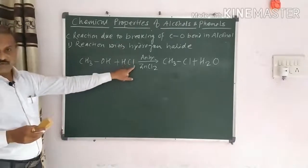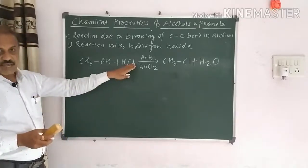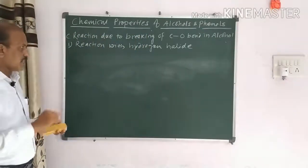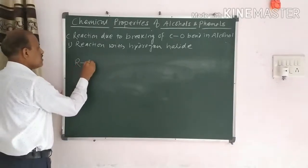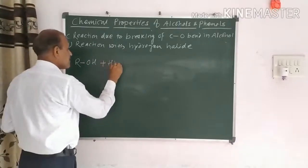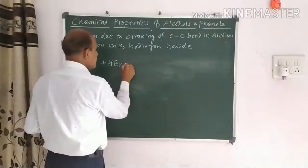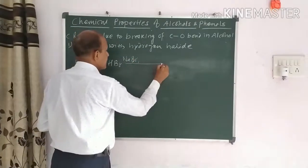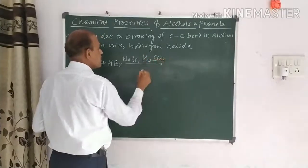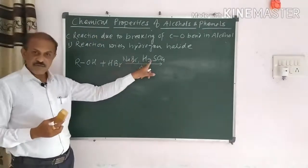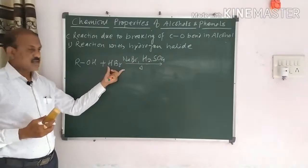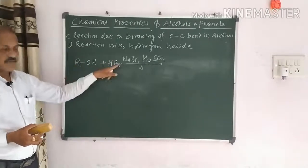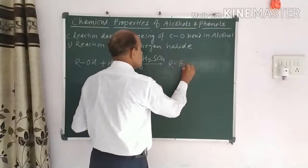For the reaction with HBr: taking alcohol ROH and reacting it with HBr, which is generated from sodium bromide NaBr and H2SO4 with heat applied. When NaBr and H2SO4 combine, HBr is formed. The same process is observed — OH and H combine together, giving RBr plus H2O.